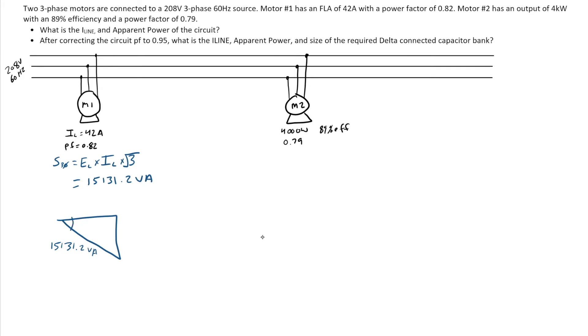So right away, what I want to do with that information is I like visual cue. So I'm going to put that onto a power diagram for specifically motor one. I've got 15,131.2 VA. My power factor here is 0.82. Now in order to get my true power, I can just simply go my apparent power times my power factor. So I can go P equals S times power factor.